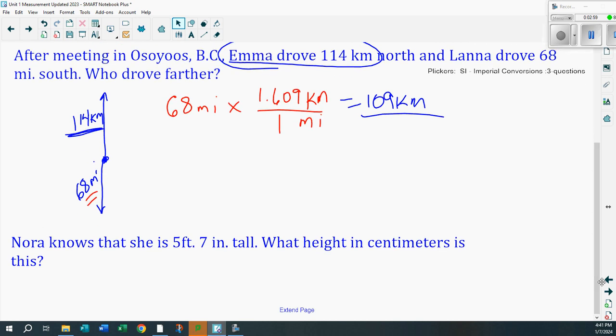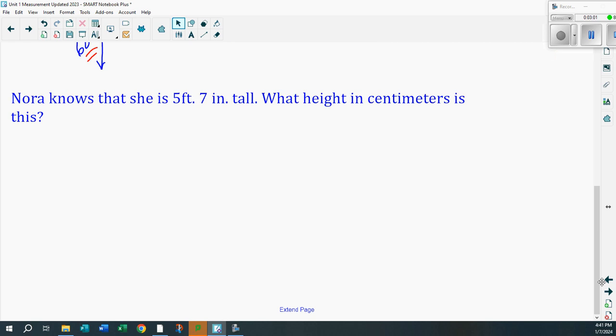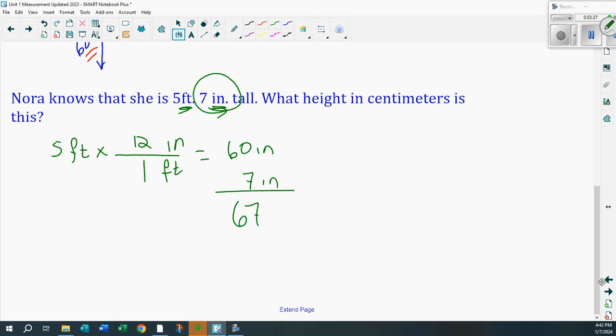Nora knows that she's 5 feet 7 inches tall. Well, there's the problem. You're dealing with two different imperial units. You're dealing with feet and inches. So let's go 5 feet. Let's convert that into inches. Feet on the bottom, inches on the top. We know we got 12 inches per one foot. 5 times 12, I think is 60 inches. Plus, you got another 7 inches there. So you're dealing with a total of 67 inches.